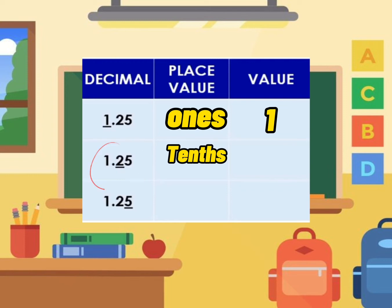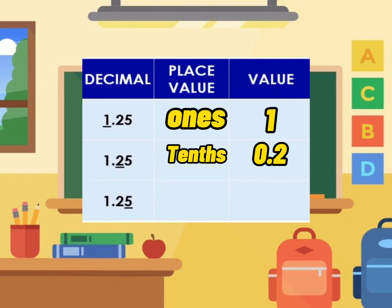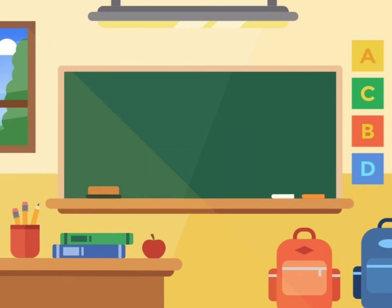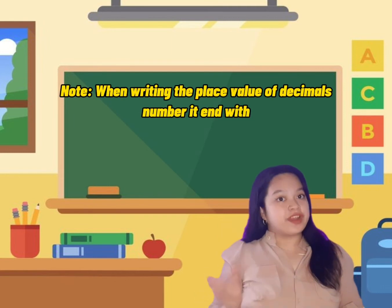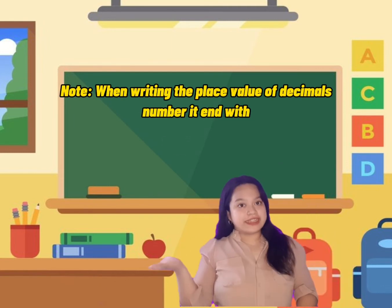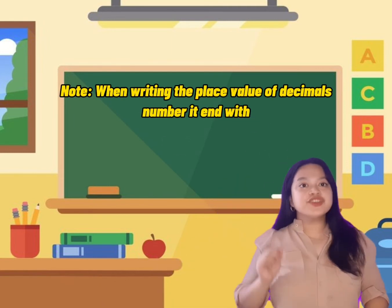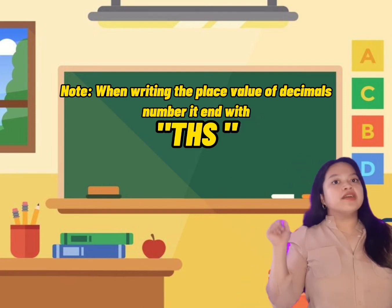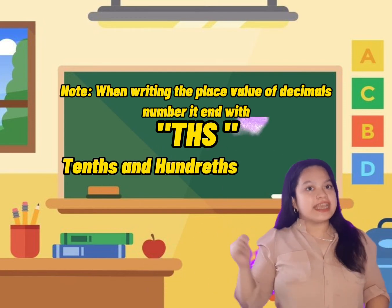On the second decimal digit, what do you think is the place value? Very good — it is tenths! How about the value? Very good! On the last digit, what do you think is the place value? Very good — hundredths! How about the value? Very good — five hundredths! Note that when writing the place value of a decimal number, it should end with '-ths,' such as tenths and hundredths.